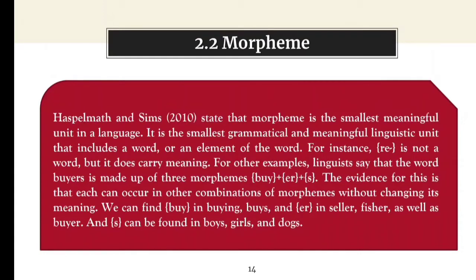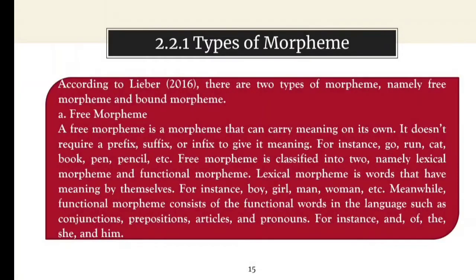As well as 'buyer', and 's' can be found in boys, girls, and dogs. Types of Morpheme. According to Lieber, there are two types of morphemes, namely free morpheme and bound morpheme.